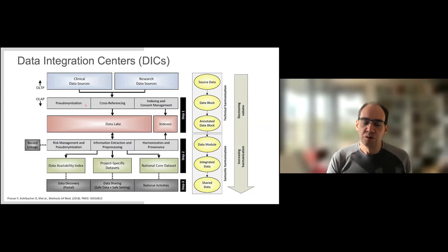What does the data integration center do? To get clinical data in a structured manner, you need to pull it out of clinical data sources, pseudonymize it to satisfy data protection requirements, and push it into a data lake where we have indices constructed on top. Then there are different steps for extracting data. There's a data availability index where you can see what types of data are available, and we can extract project-specific data sets across all data integration centers.